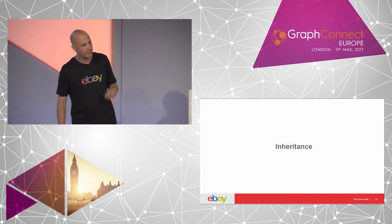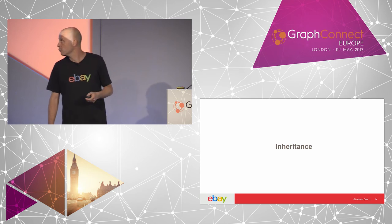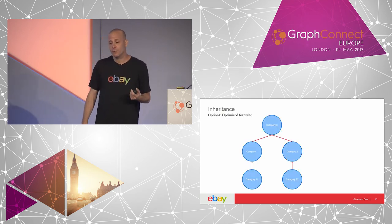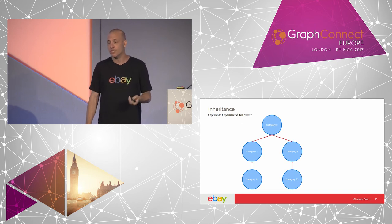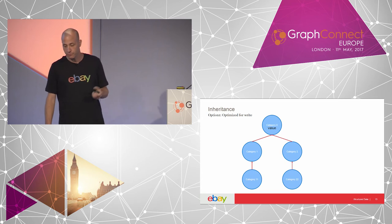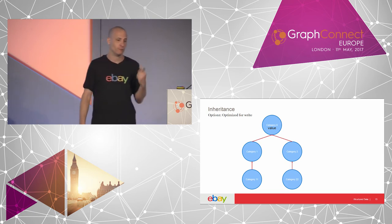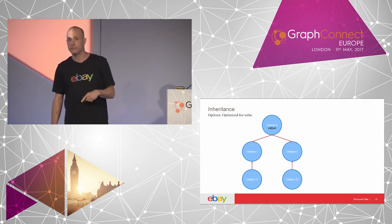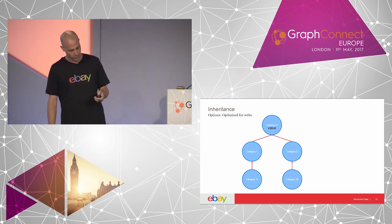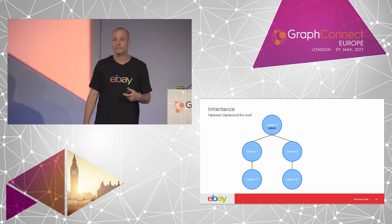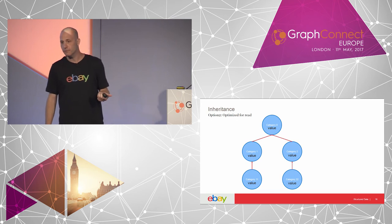Let's talk about inheritance. Our customers use inheritance a lot — they change a lot of data and we wanted to understand how to do it smartly. There are two ways. One is optimized for writes: every time you want to change the root of a subtree, you change the root, and everyone climbs up the ladder to get the value. You get very fast write time, but you pay on reads. Remember, in eBay we have subtrees containing hundreds of thousands of entities, like category trees. The other option: write to the root and propagate the data to the entire subtree. You get very fast read time, but you pay on writes.